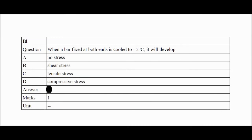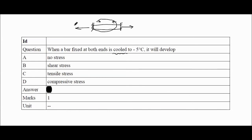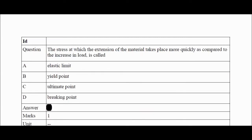When a bar is fixed at both ends and cooled by minus 5 degrees Celsius, the bar will tend to contract. The walls apply a reactive force against the contraction — i.e., force is applied opposing the shortening on both sides. This means the nature of the stress is tensile. So the correct answer is C — tensile stress.